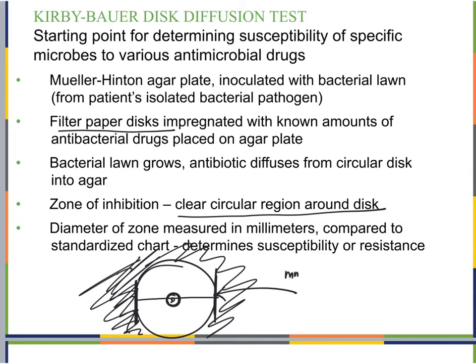The diameter in millimeters is compared to a standardized chart to determine whether the patient's bacteria is susceptible to that antimicrobial — meaning it kills it — or resistant, meaning the antimicrobial does nothing, or intermediate, with varying levels in between.